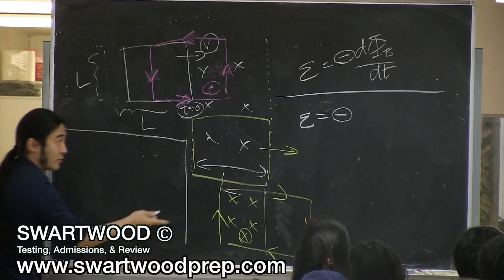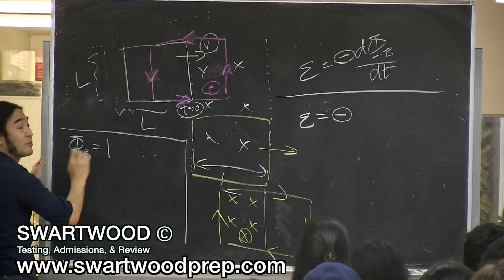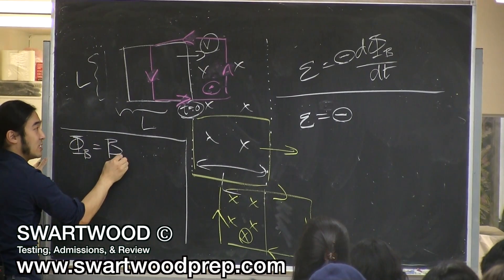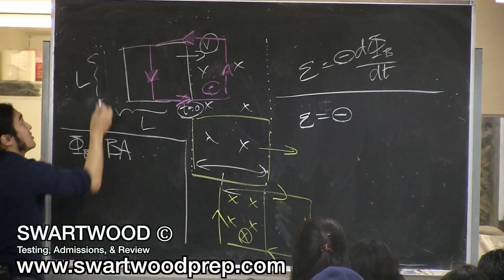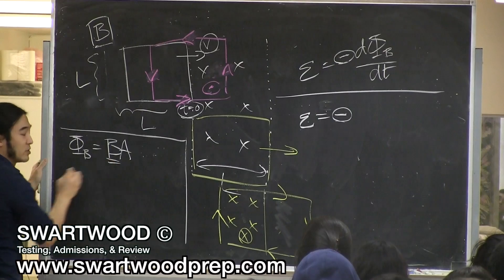This is the part that I think is kind of unfair if they don't remind you. How do you get the flux again? It's the B field times the area. So he has to tell you in the problem the B field. So he'll say a constant B field. Constant makes it nice because then it will always be B, right?